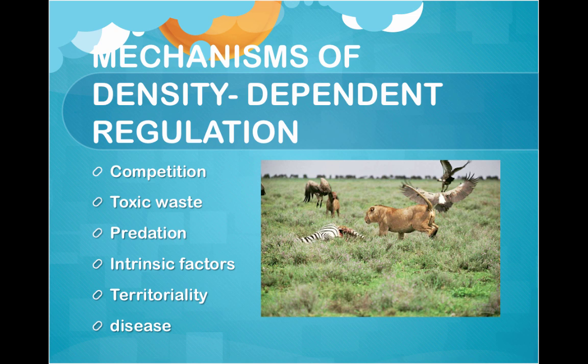Mechanisms of density-dependent regulation include competition, toxic waste produced by a growing population (for example, yeast eventually kill themselves with the alcohol they produce), predation, intrinsic factors like a lowered reproductive rate, territoriality, running out of space, and disease when there's an increase in transmission with an increase in population.